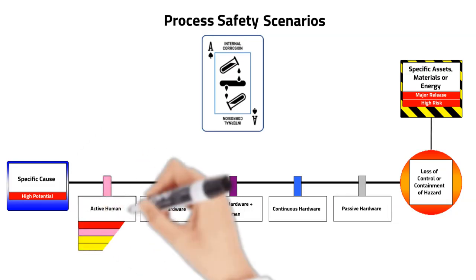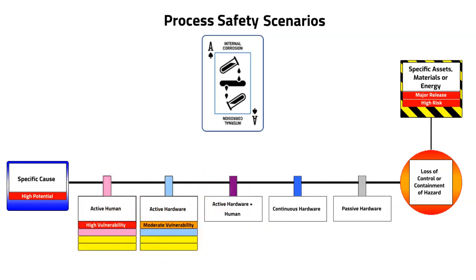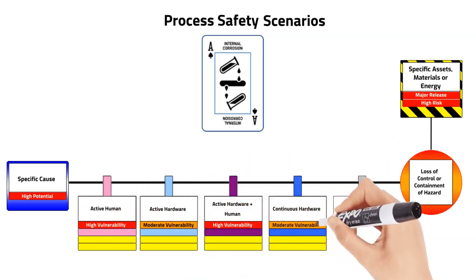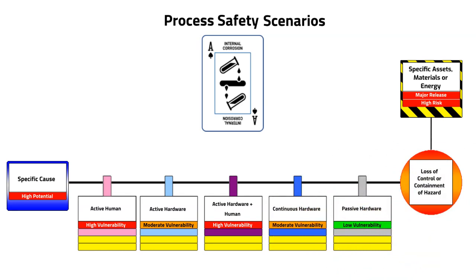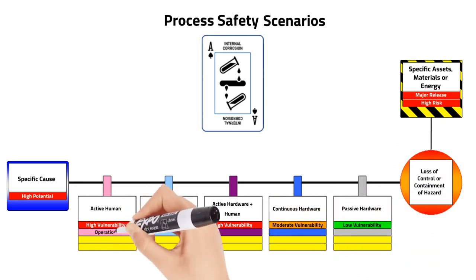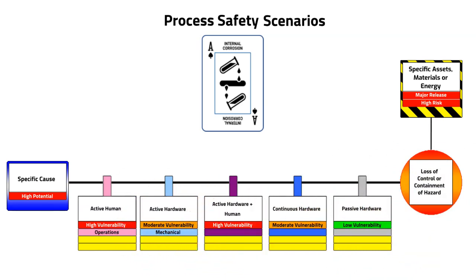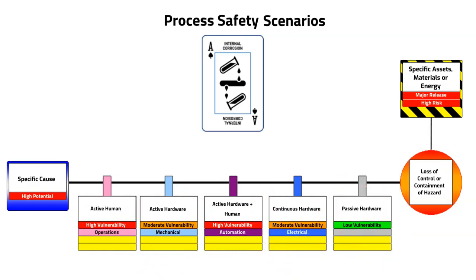Each barrier type has their own vulnerabilities, and by highlighting these in relative terms on the bow ties, personnel are more aware of the combined protection strength. Barrier ownership or accountability can be summarized on the bow ties to emphasize the roles everyone plays in sustaining the presence and performance of the barriers.